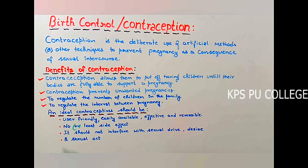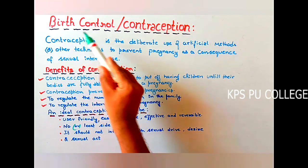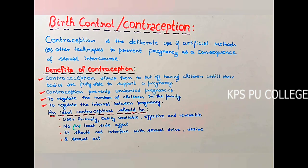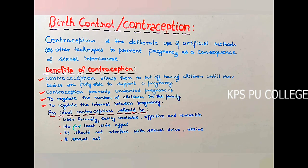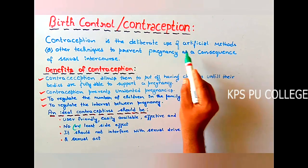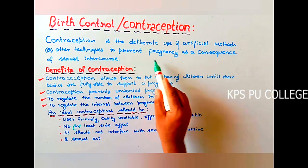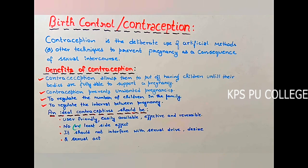Students, let us learn about birth control. Birth control is also called contraception. The number of people living today is greater than the number of people who have ever lived and died before us. From the global point of view, contraception seems to be the only hope to keep the growth of human population in check. Contraception is the deliberate use of artificial methods or other techniques to prevent pregnancy as a consequence of sexual intercourse.